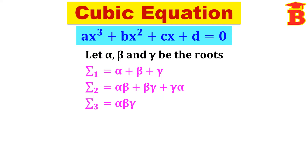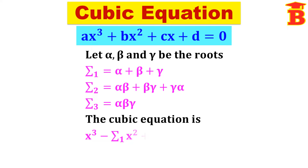Now we know how to form the equation. The formula is x cubed minus sigma 1 times x squared plus sigma 2 times x minus sigma 3 equal to 0.